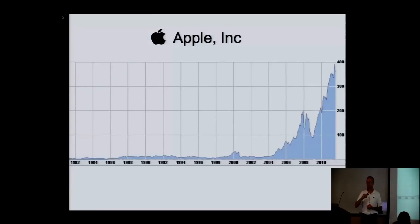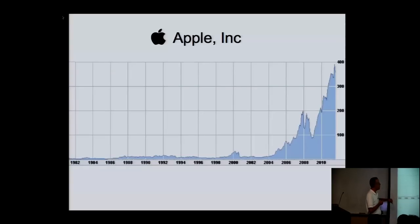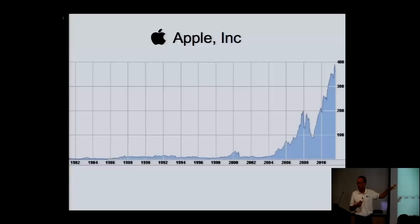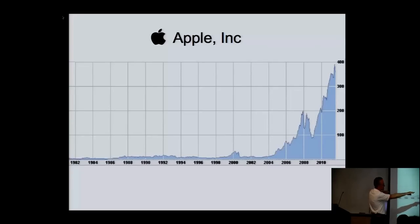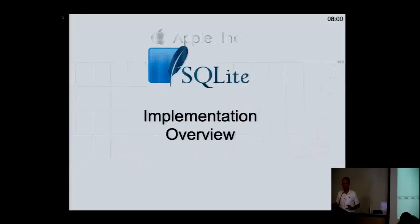I've got two marketing slides. The first is a graph of Apple's stock price from when they originally went public in 1981 up until about 2012. The stock stayed around $10 or $15 per share for over 20 years, then suddenly started rising to $1,000 adjusted for the 8-to-1 split. SQLite was introduced into the Mac platform right around where that rise began. I'm just saying.